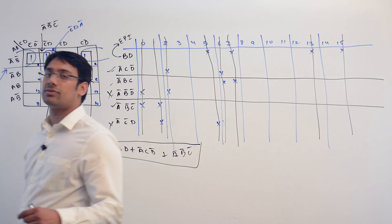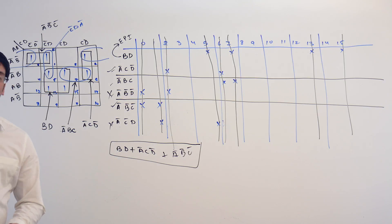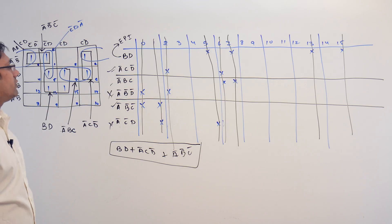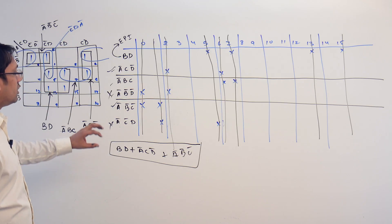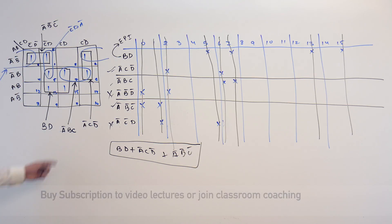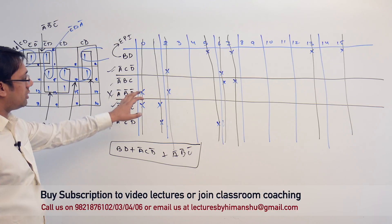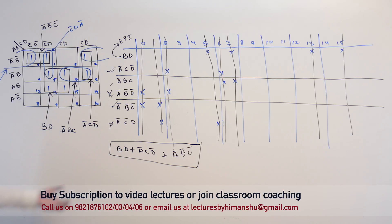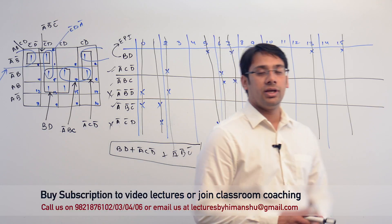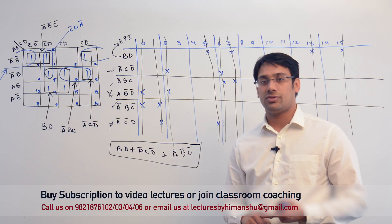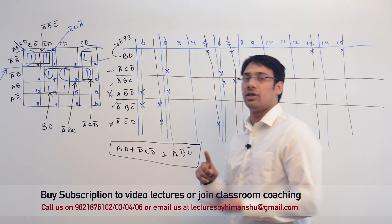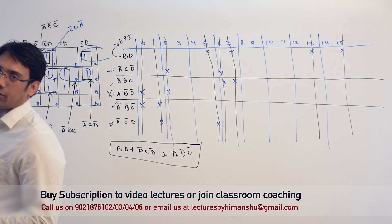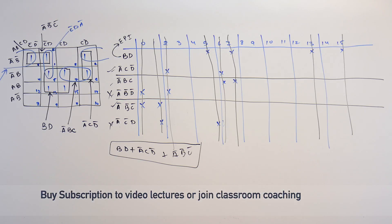It is not necessary that you will have a unique solution for every problem. We may have more than one solution. For example, instead of taking A'CD' we could have taken something else. There are cases where two or three minimized equations are possible — covering the minimum number of literals and minimum number of minterms — and they all represent the same function.